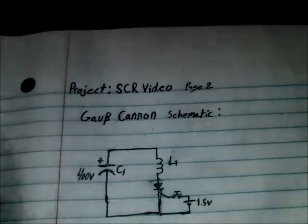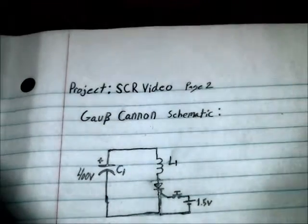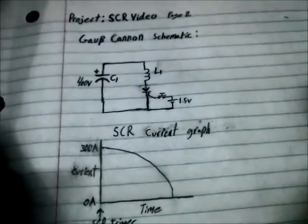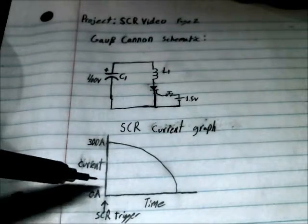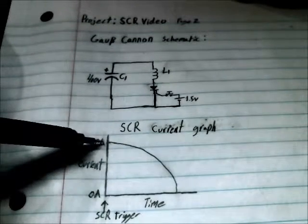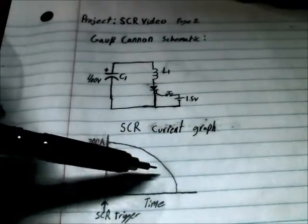The advantage of using an SCR over a relay is this. So the SCR is triggered, and the current will flow through the coil in a nice smooth curve.